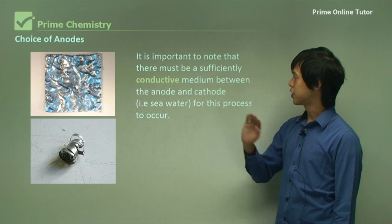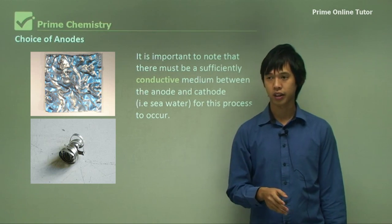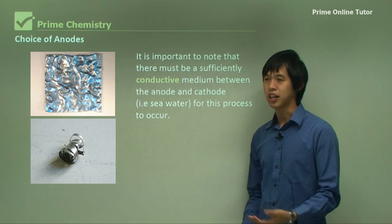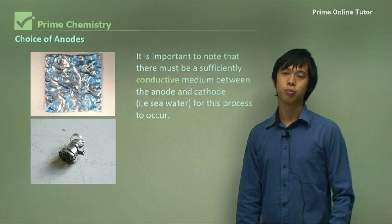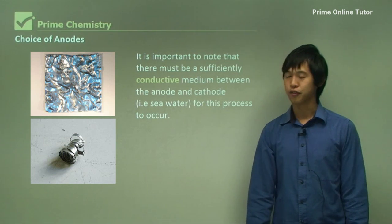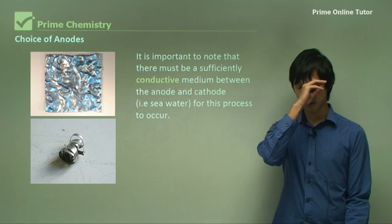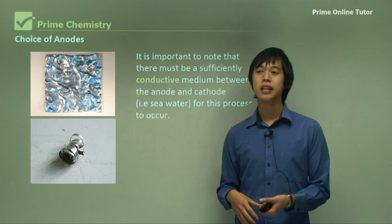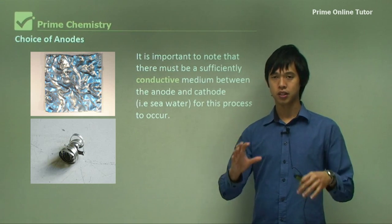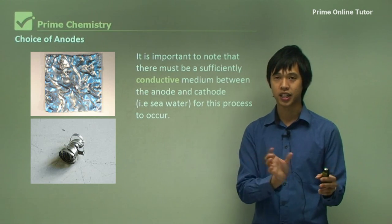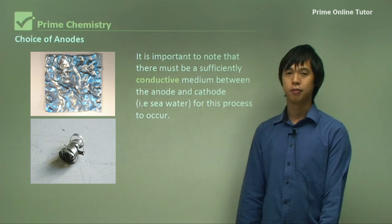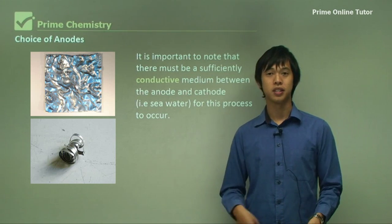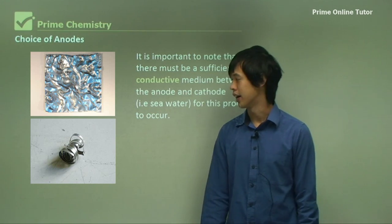It is important to note that there must be a sufficiently conductive medium between the anode and cathode for this process to occur. Without a conducting medium, you won't get any electrical movement — you can't form a circuit, and you can't pump electrons to where you need them. In marine applications, seawater acts as the electrolyte. In wet terrestrial environments, there are usually enough ions in the soil to be sufficiently conductive — in fact, phone signals were once sent through the ground because it was suitably conductive.